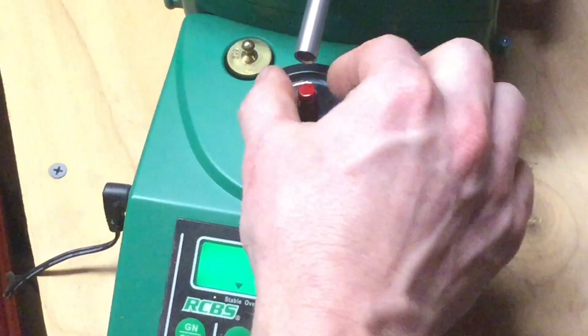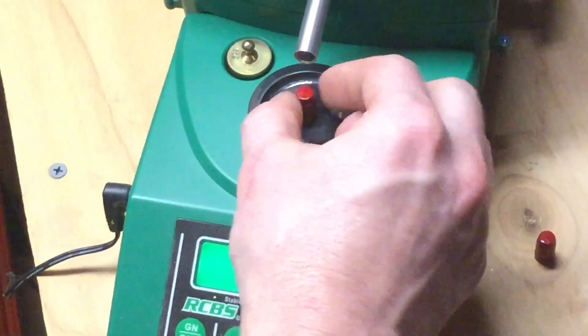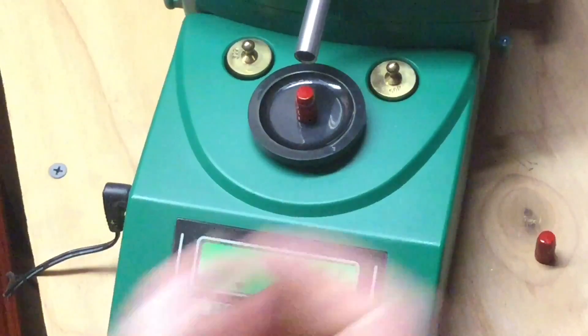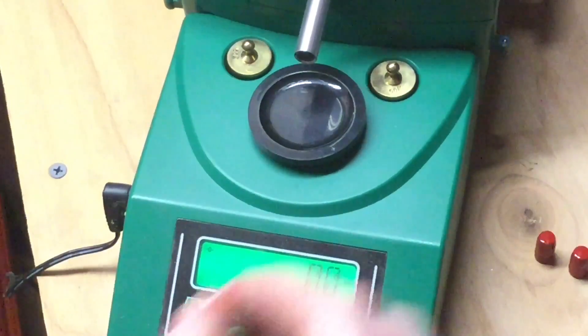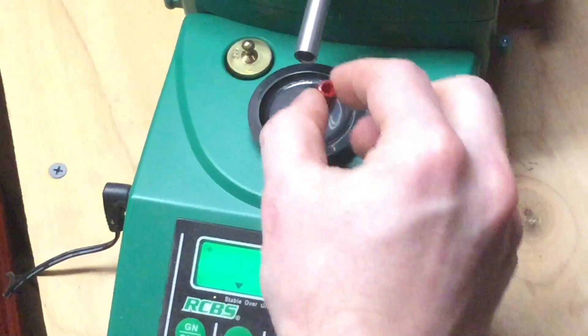161.3 grains, 161.1 grains, and 161 even. For the hollow point version of that bullet.